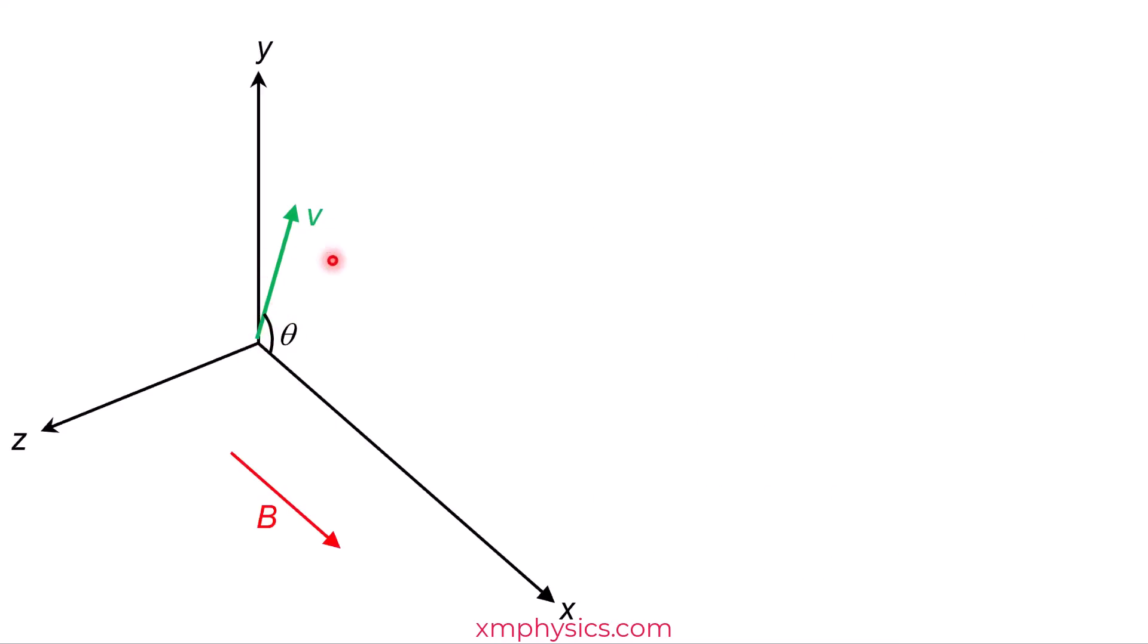So we have the V sine theta component that will keep the charge in circular motion, and we have the V cosine theta component which will keep the charge moving forward at a constant speed along the X axis. So we just have to superpose these two motions to arrive at the resulting motion, which is a helical path.